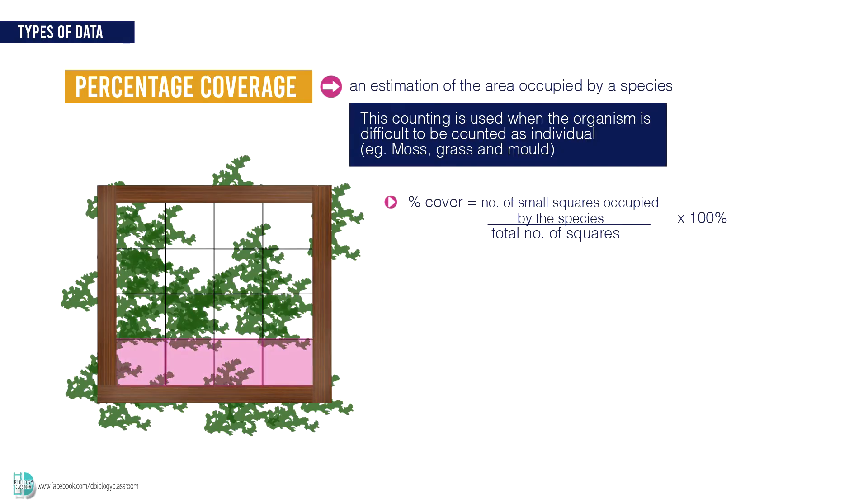Sometimes you may have some small squares which are not fully occupied by the species. You can add a few squares like this and count them as 1. Some researchers choose to eliminate those squares if the coverage in it is too little. Whichever it is, just make sure you are consistent in the whole sampling process.